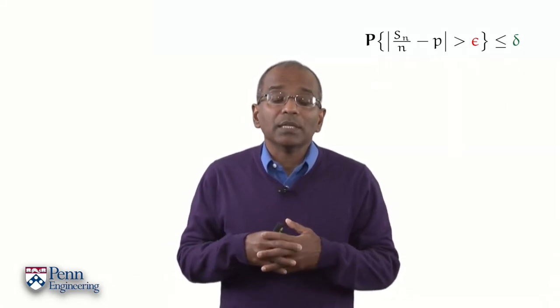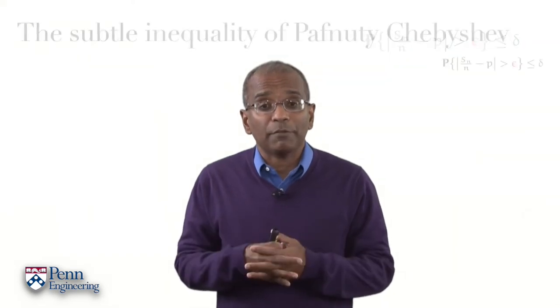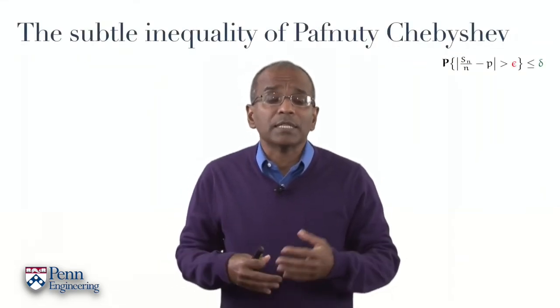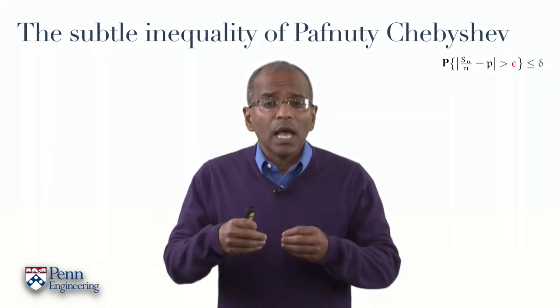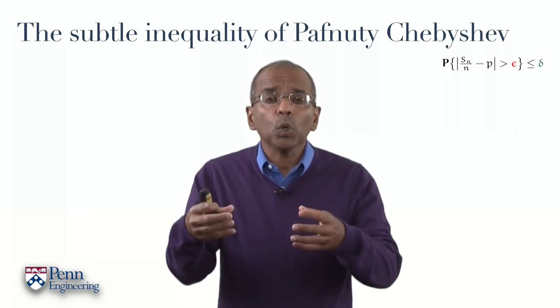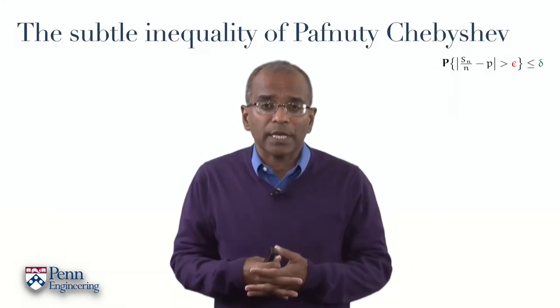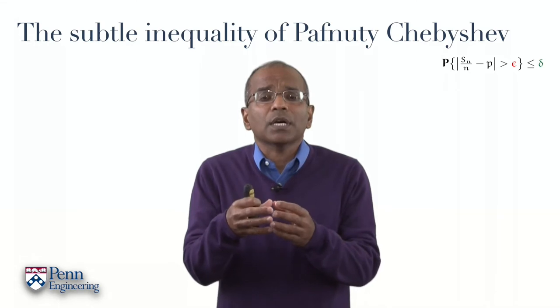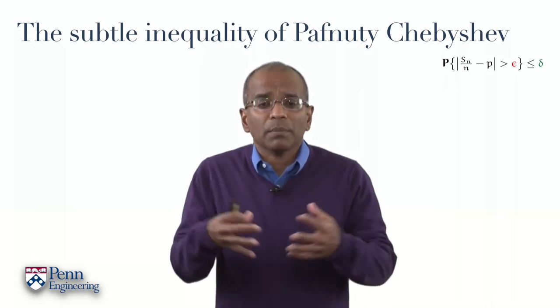A huge step forward was made by the great Russian mathematician Pafnuty Chebyshev. Chebyshev was born in 1821. He lived a long life, died in 1894. And in many ways, you can find Chebyshev's fingerprints all over modern mathematics. In many ways, you can think of Chebyshev as a father of Russian modern mathematics.